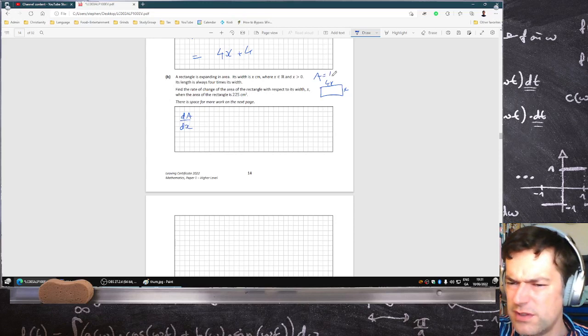The A is four x squared, so it's just the derivative here, eight x.